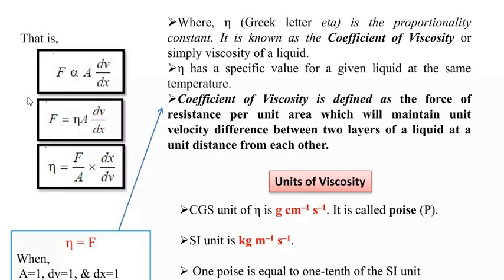If F is directly proportional to A times dV by dX, and you replace proportionality with proportionality constant eta, then F equals eta times A times dV by dX. So eta equals F divided by A into dX by dV. Coefficient of viscosity is defined as the force of resistance per unit area which will maintain unit velocity difference between two layers of a liquid at unit distance from each other.